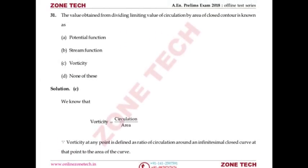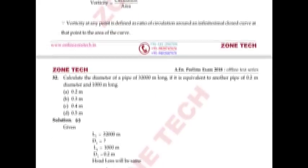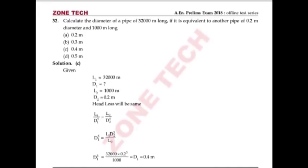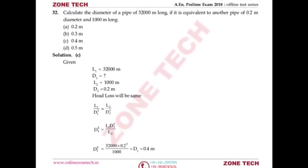Question number 31: The value obtained from dividing the limiting value of circulation by area of a closed contour is known as vorticity. Answer is C.